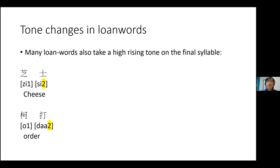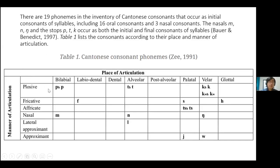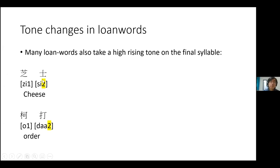Tone changes also happen in loanwords. Since Hong Kong is a former British colony, many words in modern Cantonese are borrowed from English. For example, the word 'cheese' — in a normal case, the syllable would be pronounced in tone one, but because it is a loanword it changes to the second tone. So it becomes 'zi2 si2' instead of 'zi1 si1.' Another example with the character 'da' also appears in the second tone, meaning 'order.'